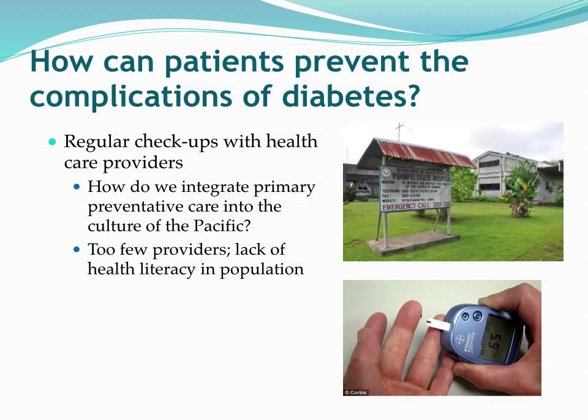We're trying to integrate new providers such as nurse practitioners in a program being developed in the Marshall Islands with Fiji National University and the community college over there. But how is it that we can get more providers — in particular, local providers who are part of the culture here and understand Pacific culture so that we're not as heavily reliant on expat providers?